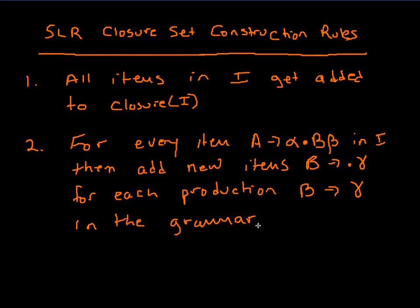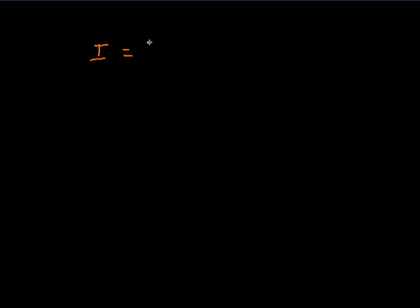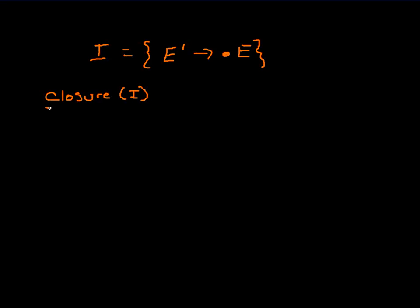Let's look at an example. One of the sets that's important to start the construction is a set containing the augmented grammar initial item: E prime produces dot E. We want to take the closure of this set. By the first rule, everything in I gets added to the closure of I, so E prime produces dot E is in the closure of I.